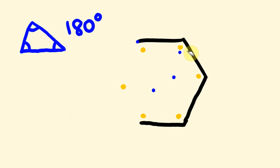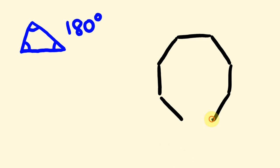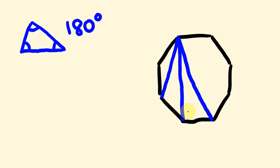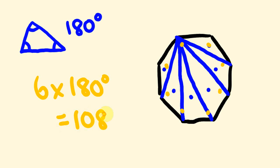What about a different shape? Let's have a look at an octagon, which has eight sides. I'd get you to draw out an octagon and try this yourself. Breaking it up into as many triangles as I can: one triangle, two triangles, three, four, five, and six triangles. Six times 180 will give us the total of all these angles. Six times 180 is 1080 degrees.